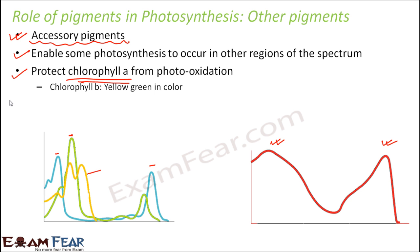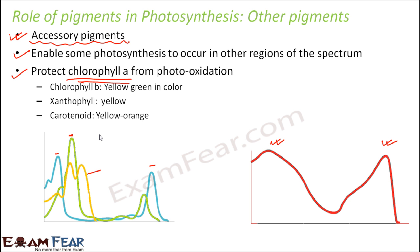The accessory pigments are: chlorophyll B, which is yellow to green in color; xanthophyll, which is yellow in color; and carotenoid, which is yellow-orange in color. Because of the presence of so many pigments, if chlorophyll A becomes scarce in a plant, the color of the leaves turns lighter — from dark green it gradually fades to light green, and if there is no chlorophyll A at all the color turns yellow. That yellowish color is because of these accessory pigments, as all of them have a yellowish touch in their color.